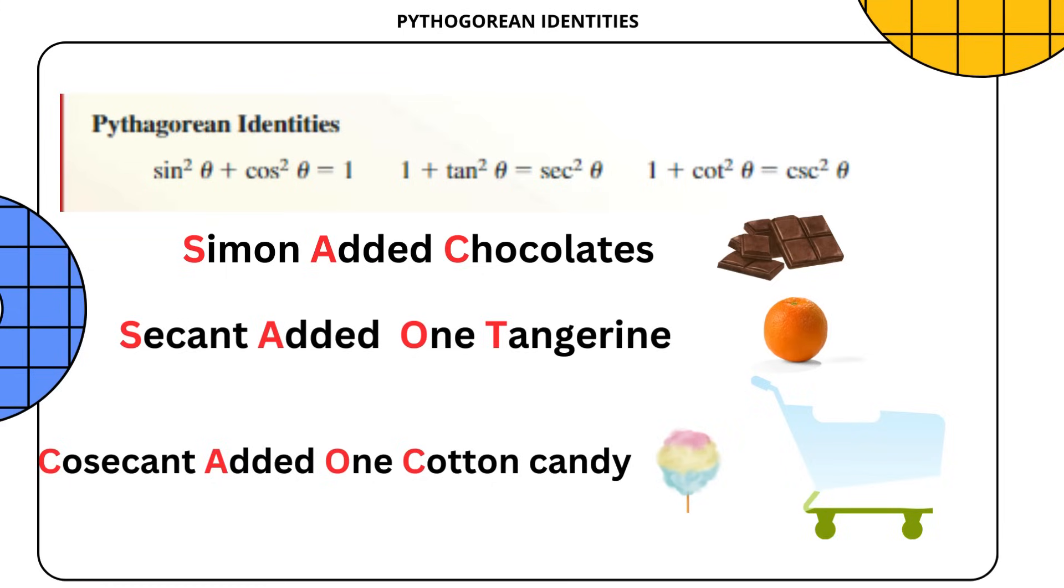Simon added chocolates: sine as in Simon, added is plus sine, and cos as in chocolates. As it is an identity cart, both add up to 1.